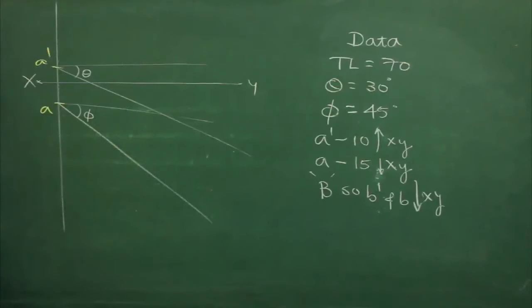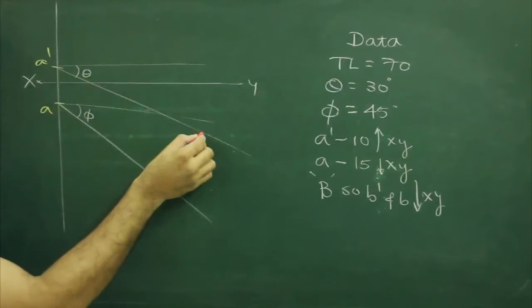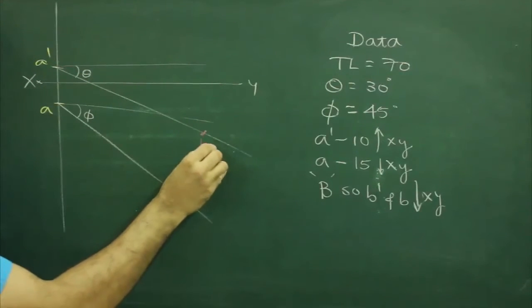First I will mark true length. So true length is 70. From here I will cut 70 on this. That would be b dash.